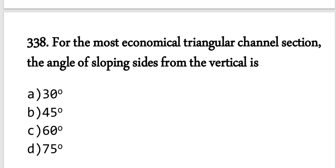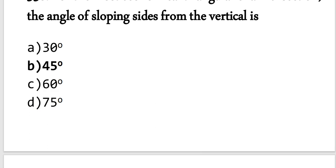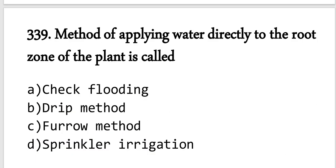Question number 338: For the most economical triangular section, the angle of the sloping side from the vertical is 45 degrees. Try to remember this.